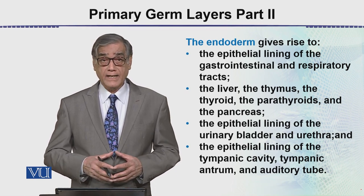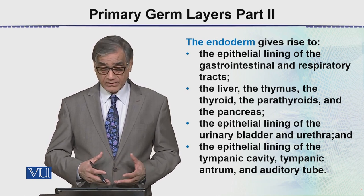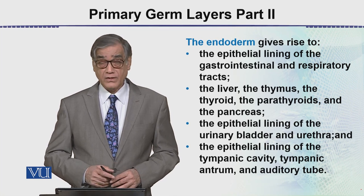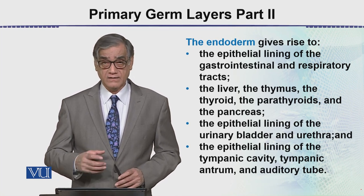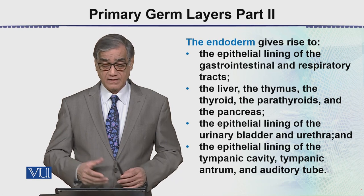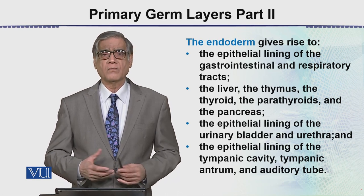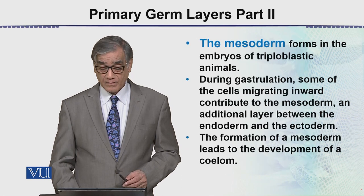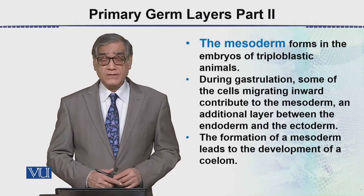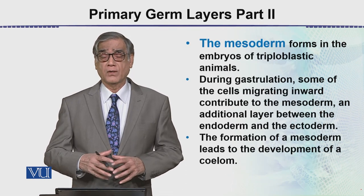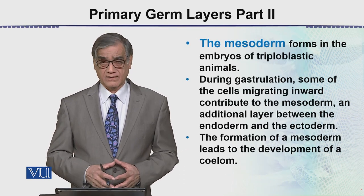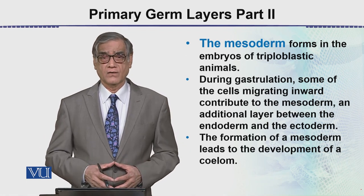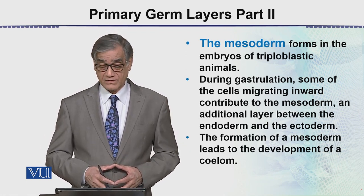The epithelial lining of the tympanic cavity — that is the ear — including the tympanic antrum, the auditory cavity, and the auditory tube, which is the ear structure, is almost entirely derived from the endoderm. The mesoderm is very complex, and there are different types of cells which are derived from it.